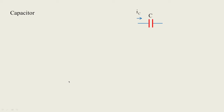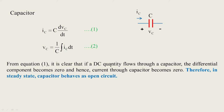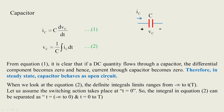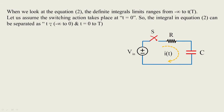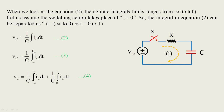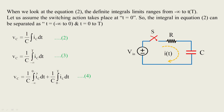To understand capacitor behavior: when current flows through a capacitor it develops a voltage vc. The current flowing through the capacitor is ic = C · dvc/dt, and the voltage derivative gives vc = (1/C) ∫ ic dt. It is clear that if a DC quantity flows through the capacitor, the differential component becomes 0 and hence current through the capacitor becomes 0. Therefore, in steady state the capacitor behaves as an open circuit — unlike the inductor which behaves as a short circuit.